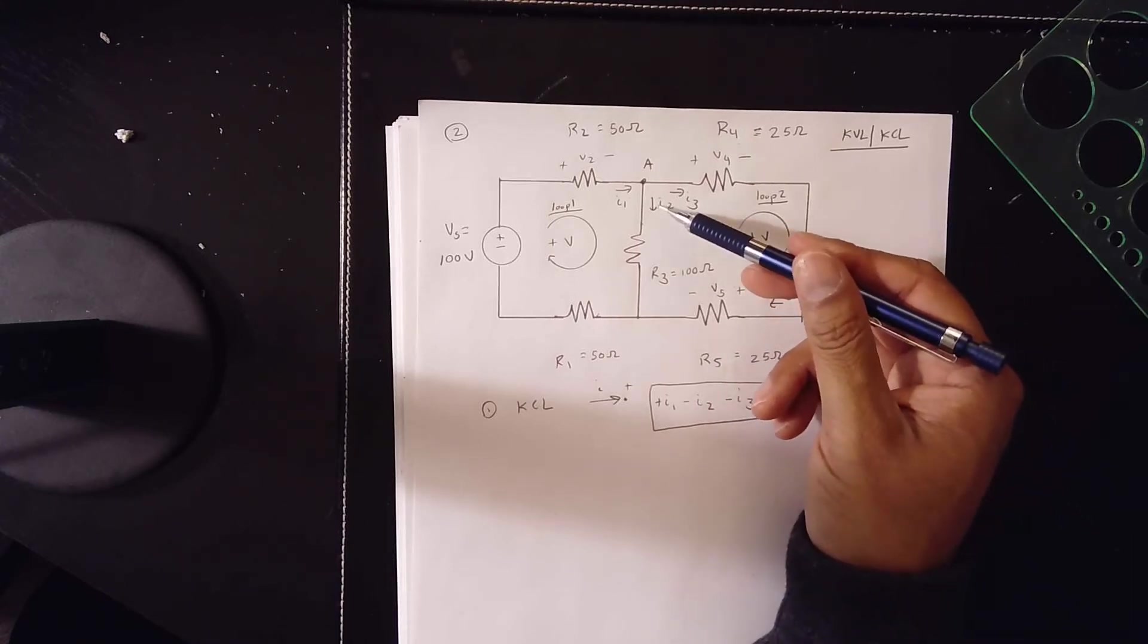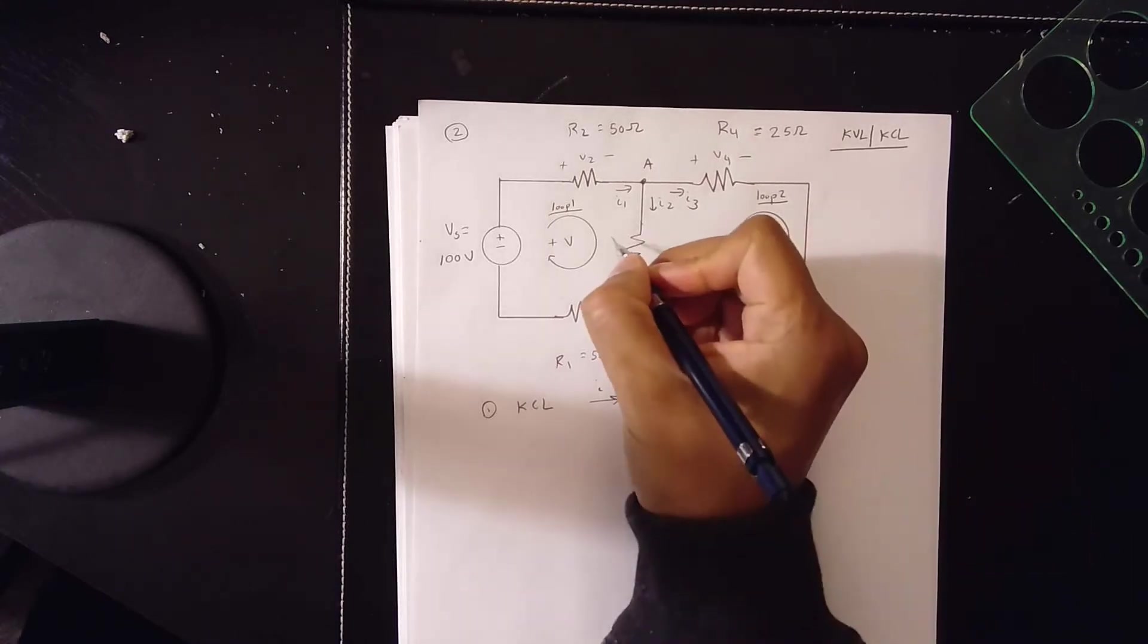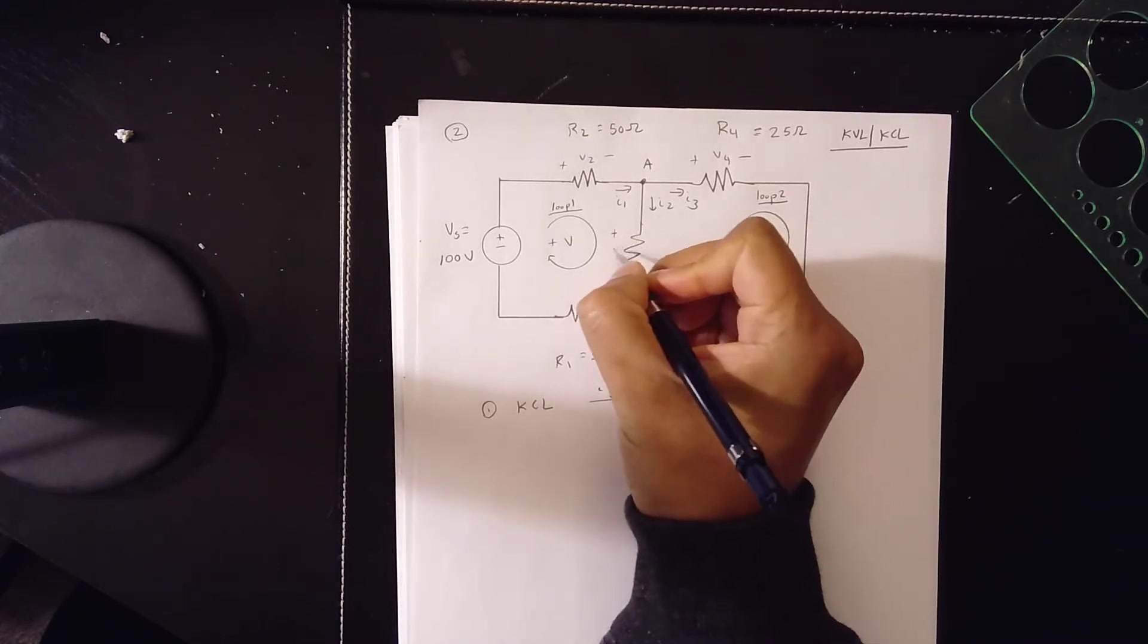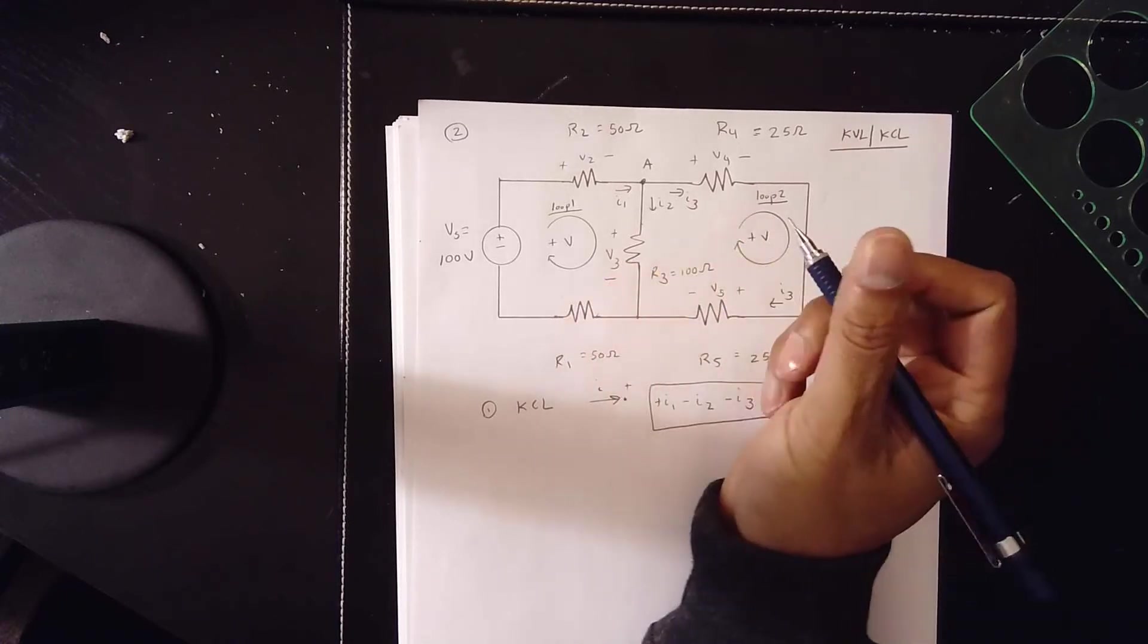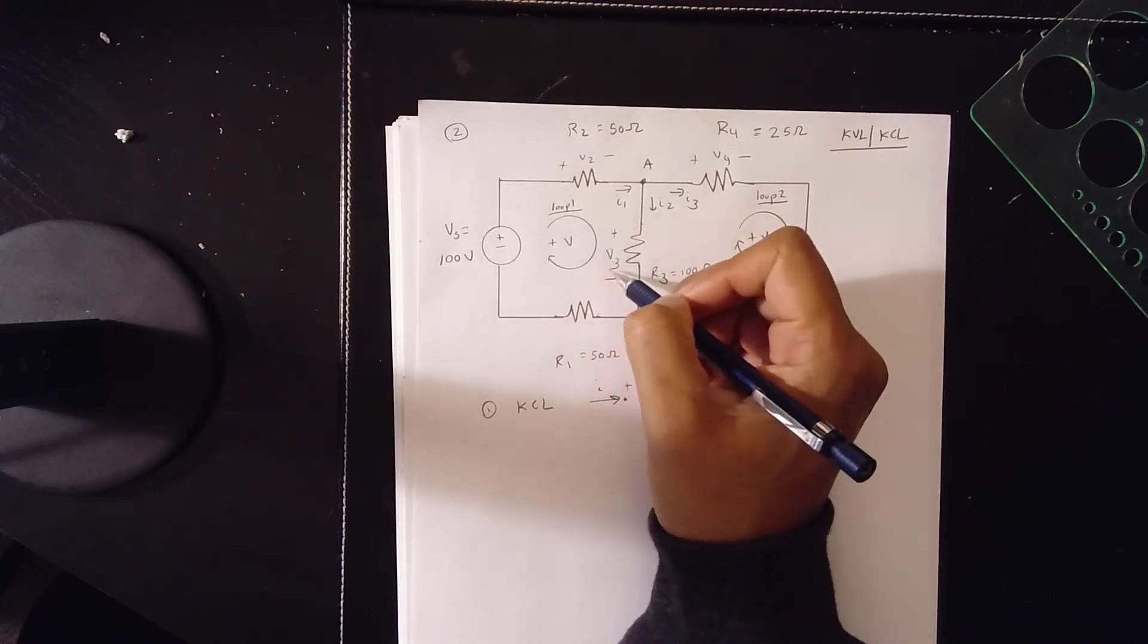As the current moves down, this resistor will induce a voltage on this side called V3. For this loop, it'll be V3.